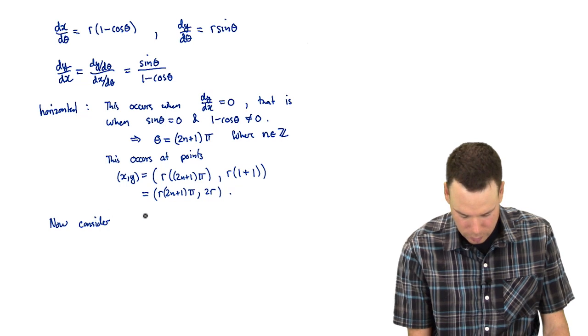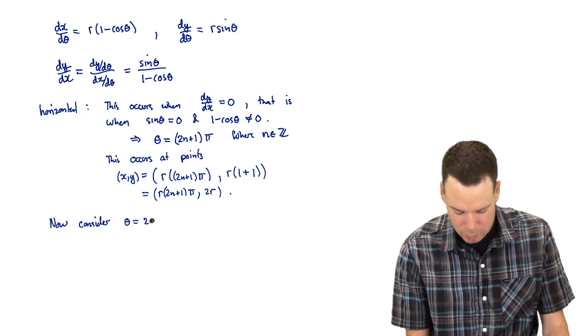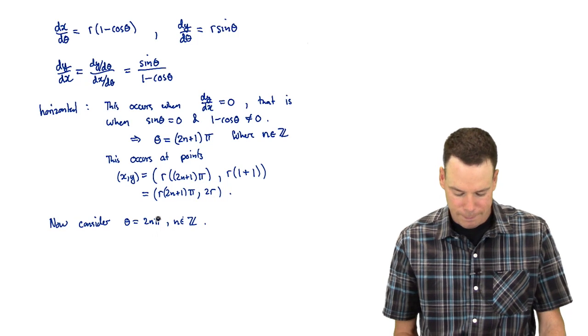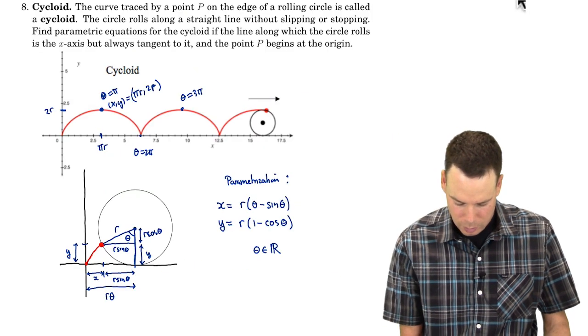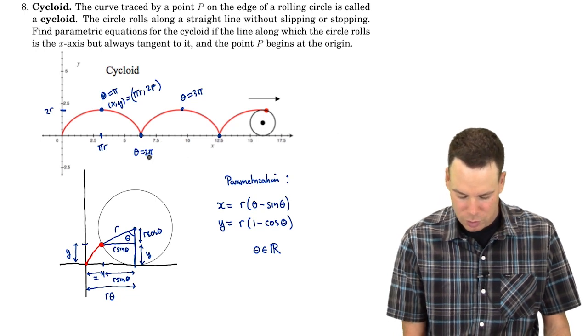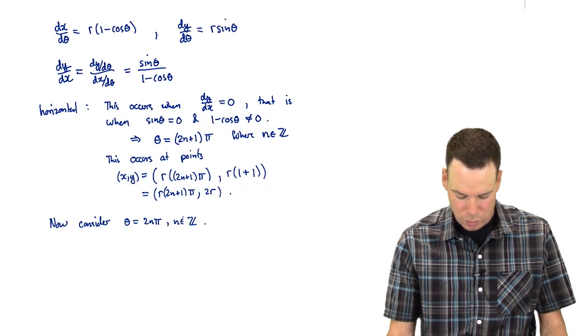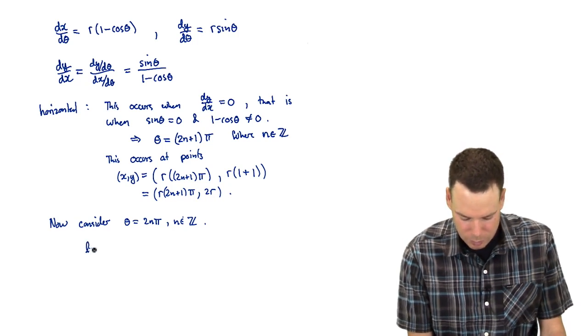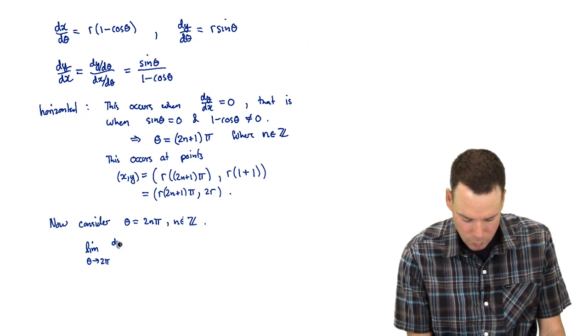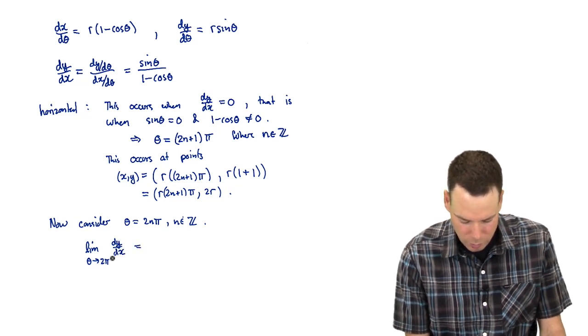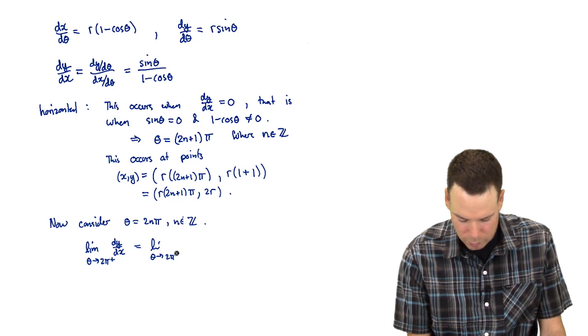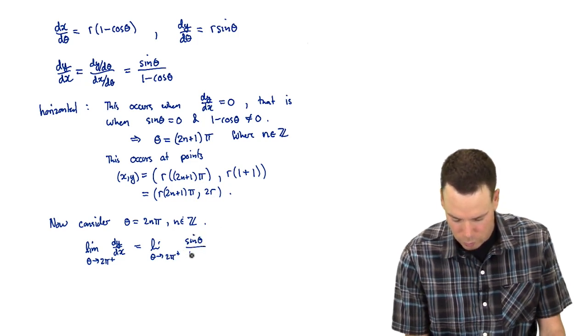Now consider theta equal to an even multiple of pi. We'll just look at the first instance when it's 2pi. Again, look back at the diagram here. Or just look at this one because it's periodic. The same thing happens at 4pi, 6pi. So we're just going to focus our attention when theta is near 2pi. What we're going to do is we're going to see what happens to the derivative as theta heads towards 2pi. What happens to dy by dx? And there's two different directions we can come at it from. So we'll come at it from the right at first.